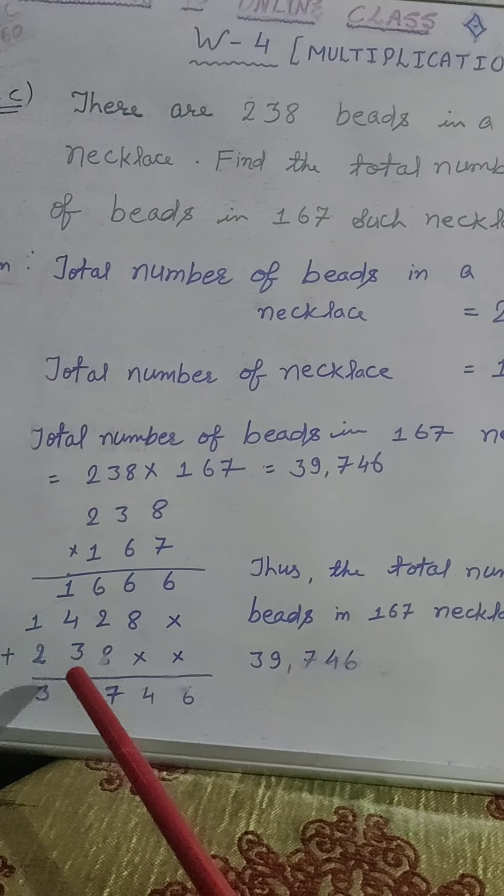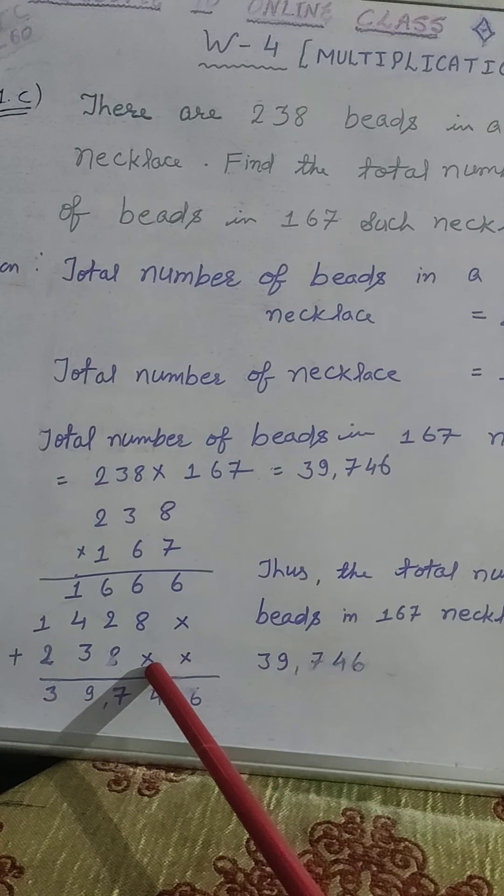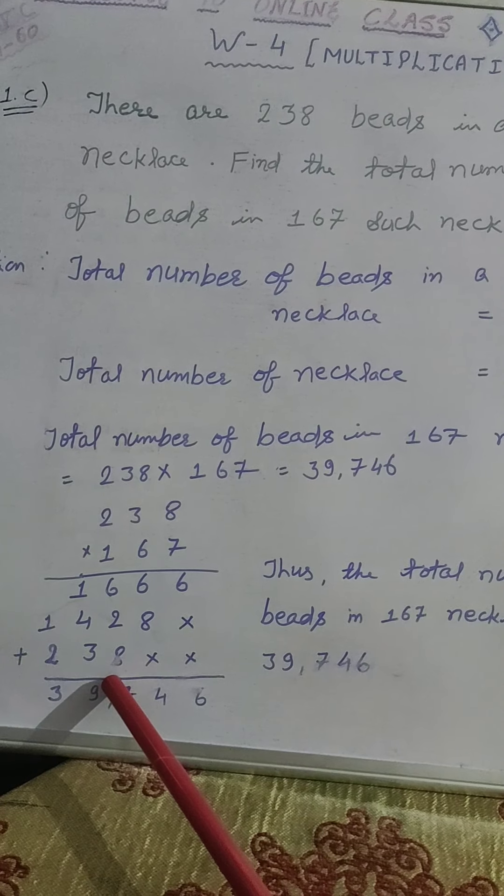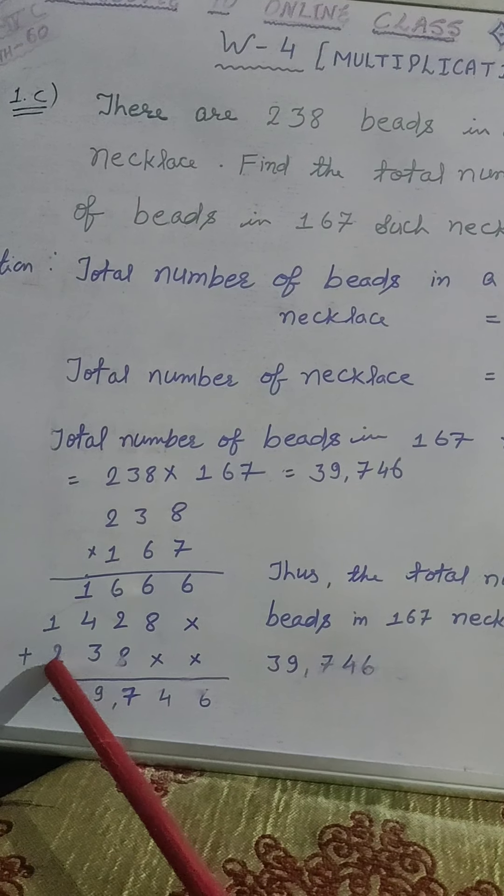Now, come in next line. We put 2 cross symbols here. And we start from here. 8 times 1 is 8, 3 times 1 is 3, and 2 times 1 is 2.